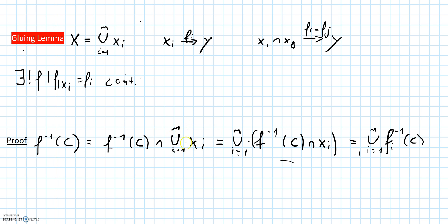Because remember, this is just X, so we have done nothing. But this intersection can also be written as the union of the intersections of the pre-image of c under the map f intersected with xi. And this intersection of the pre-image of xi is nothing but the pre-image of the set c under the map fi.